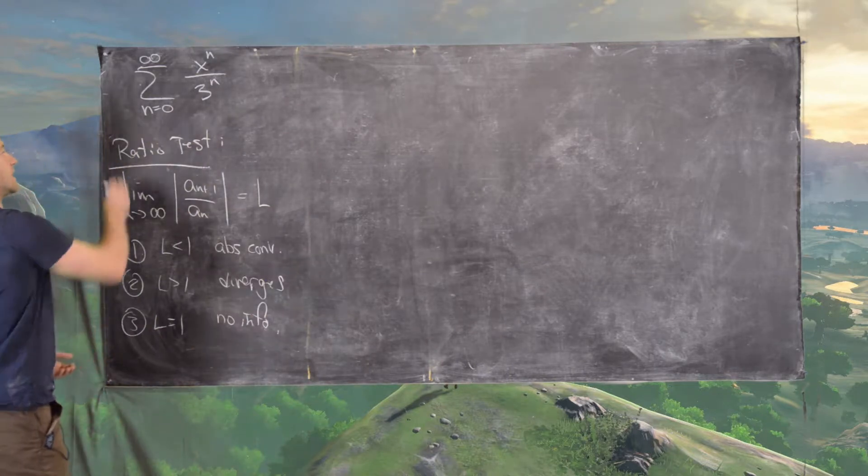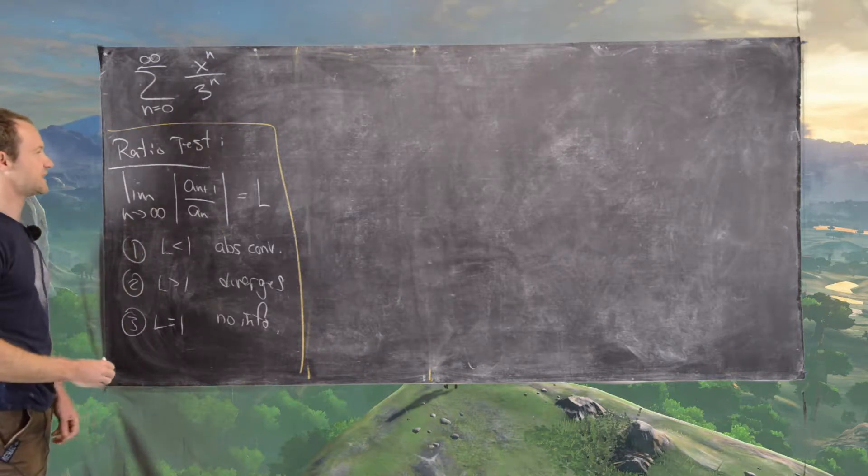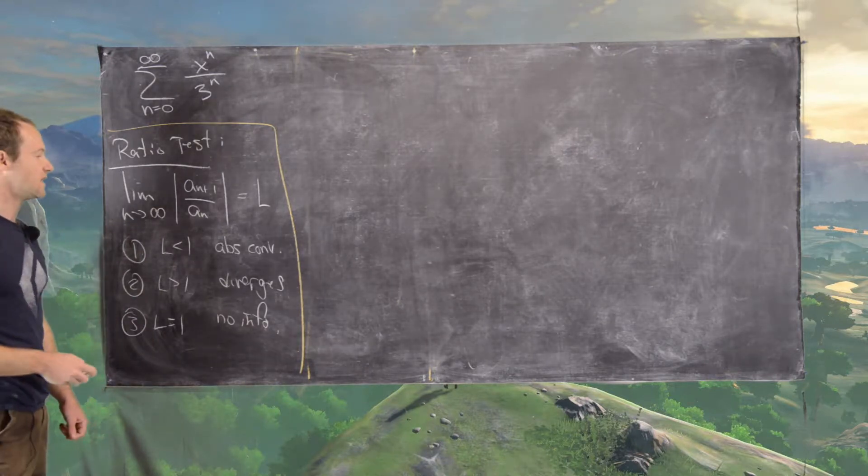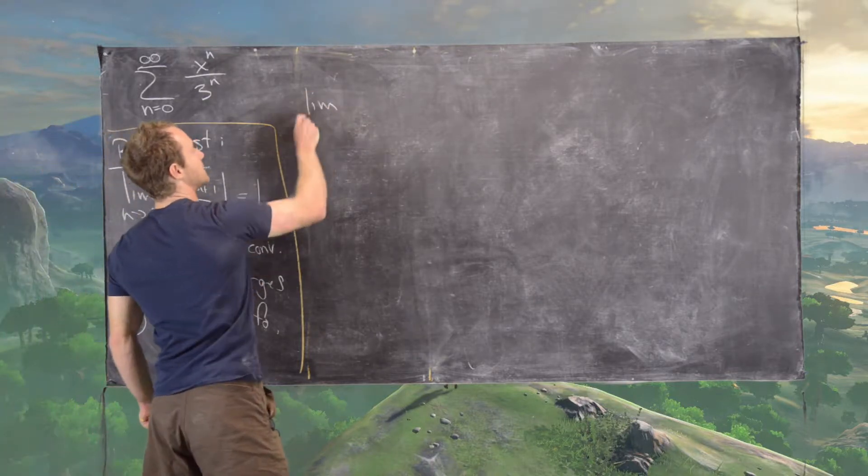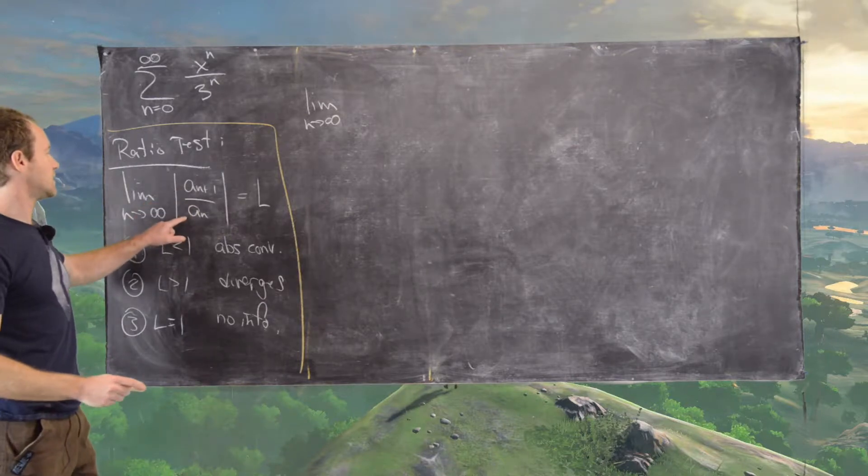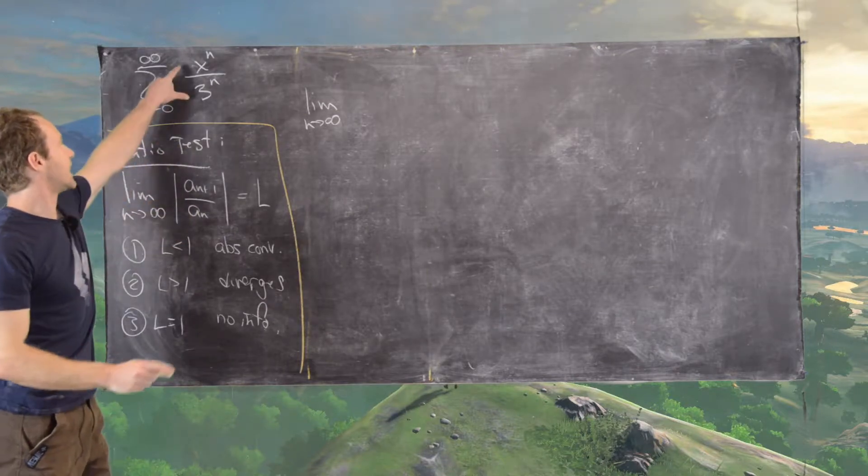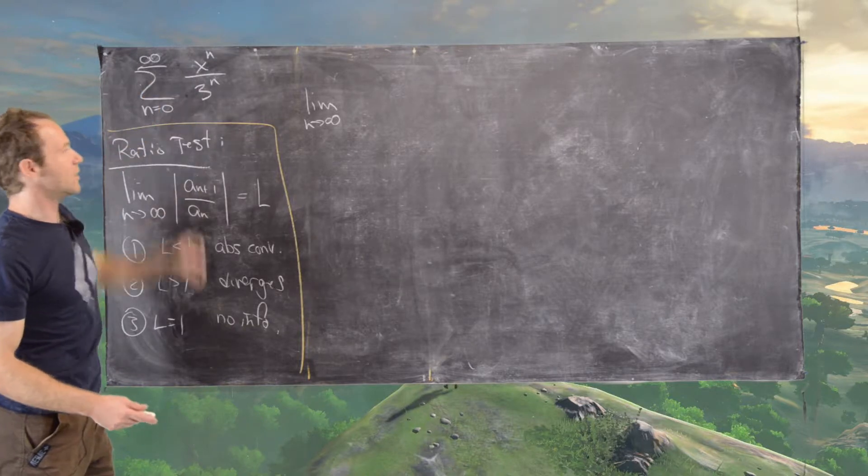Great, so we want to apply this ratio test to at least getting our radius of convergence and then we'll find our interval of convergence using another test. So that means we need to look at the limit as n goes to infinity of a n plus 1 over a, its absolute value, where a of n is equal to x to the n over 3 to the n.